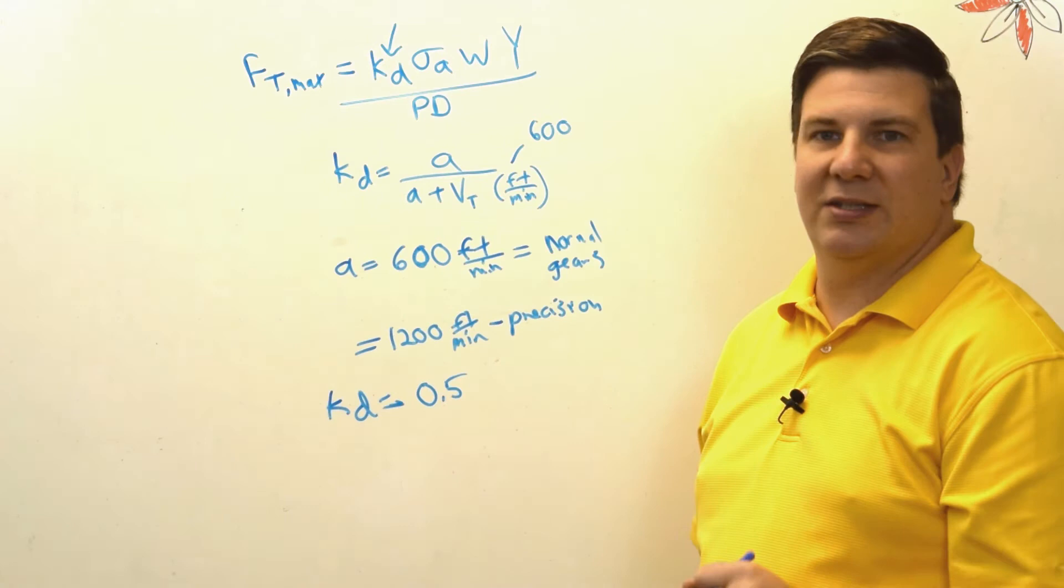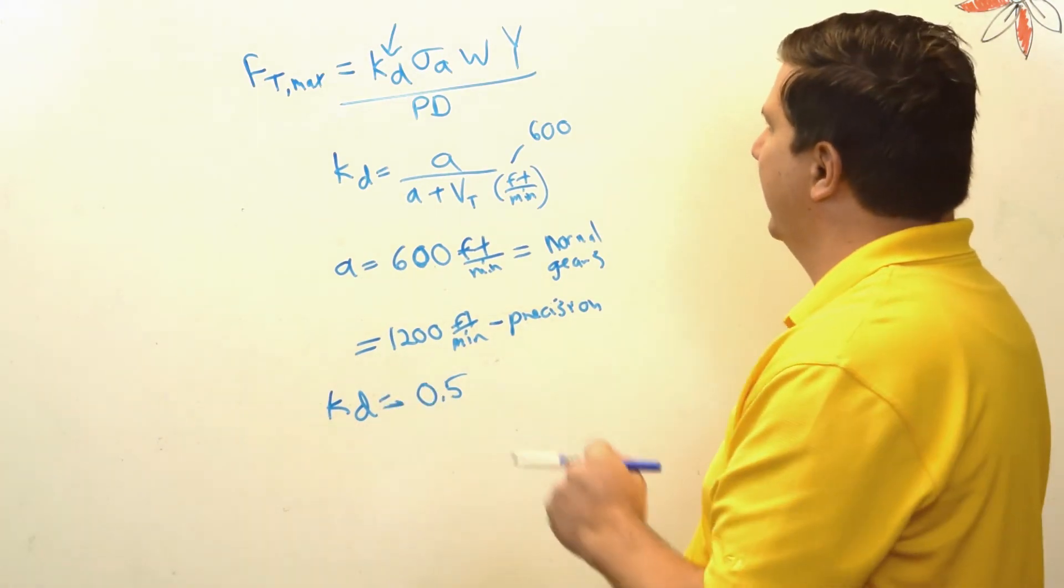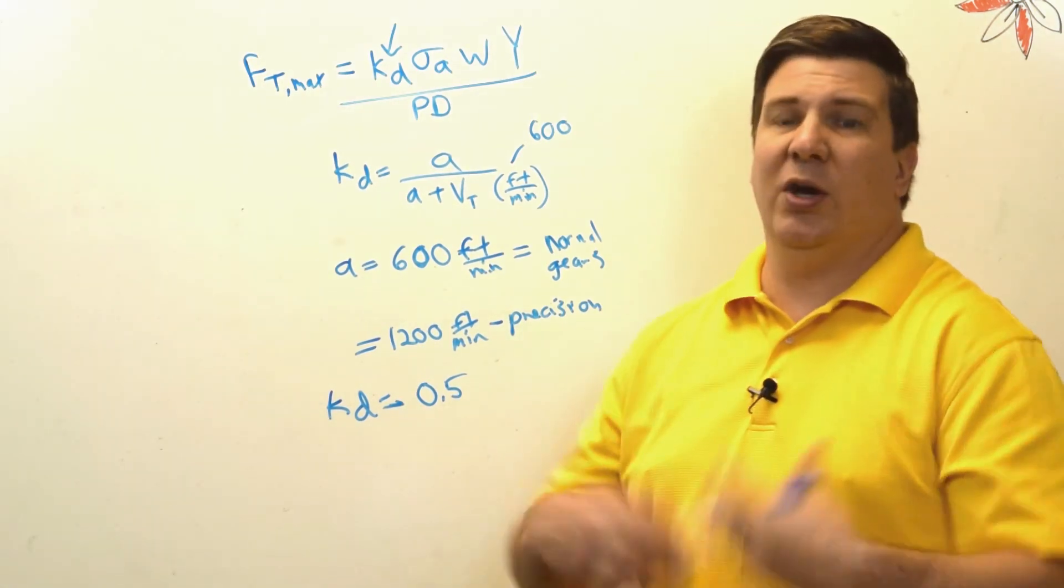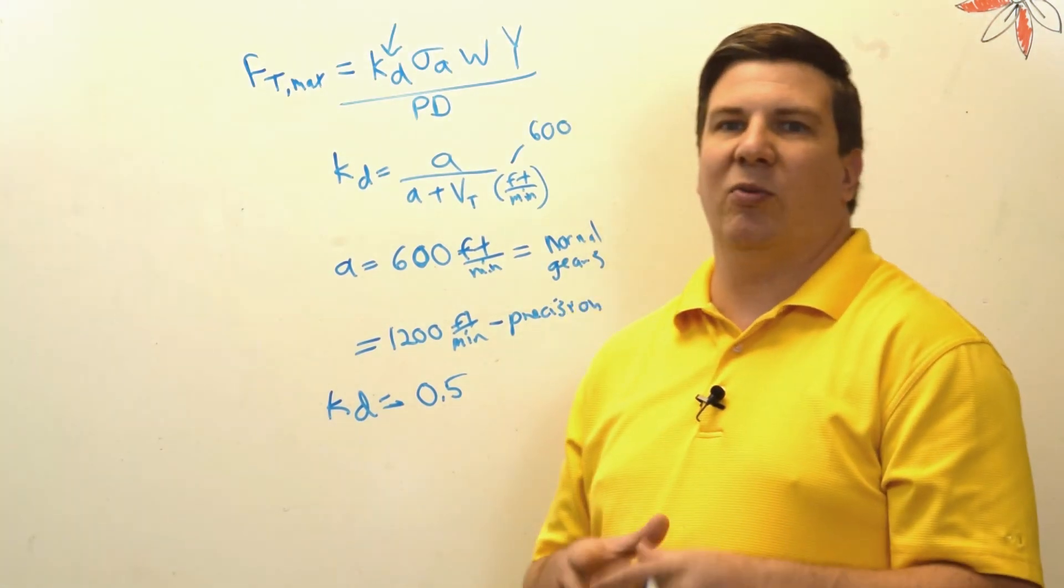So we're looking at 1370 pounds that our gear tooth can take. Now you also probably don't want to be running right up at your yield strength.